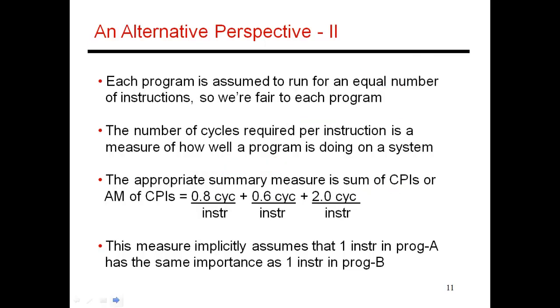Now let's look at alternative perspective two. Let's weight the program such that every program gets to run for an equal number of instructions. In that case, the number of cycles that it takes me to finish one instruction is a measure of how well a program is doing on a given system. If I have a large benchmark suite, let's see if the sum of CPIs turns out to be a decent measure. Sum of CPIs is essentially adding up 0.8 cycles per instruction, plus 0.6 cycles per instruction for program B, and 2.0 cycles per instruction for program C. The sum of CPIs is 3.4 cycles for every three instructions where every program contributes one instruction. This is also a reasonable measure. It is measuring execution time while weighting every program equally in terms of the number of instructions they finish.